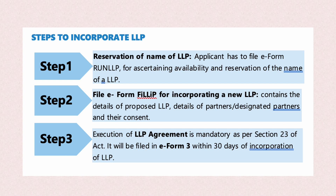Let's revise the steps for incorporation of LLP. First, if someone wants to reserve a name, they can reserve it first and then submit the application. After that, the details and documents as seen in Section 11 should be filed in e-filing form. The execution of the LLP agreement is mandatory as per Section 23, and must be filed in e-form within 30 days of incorporation. After incorporation is completed, the LLP agreement must also be registered with the Registrar within 30 days.